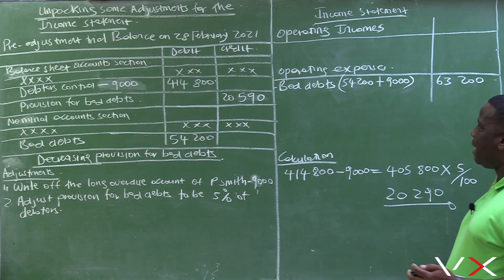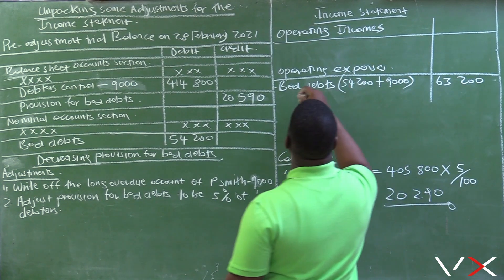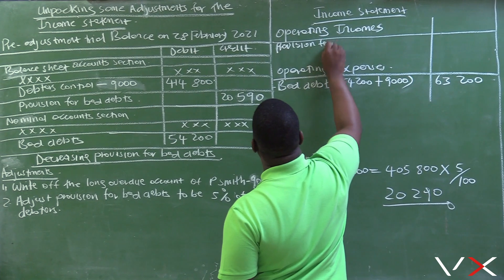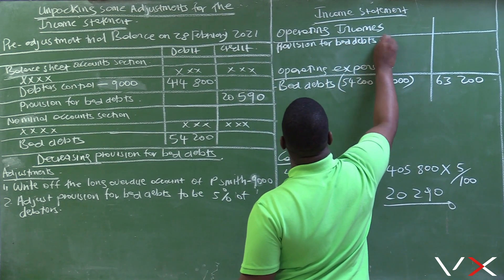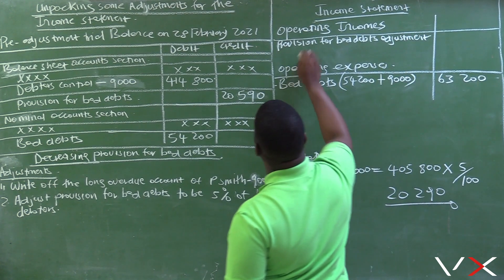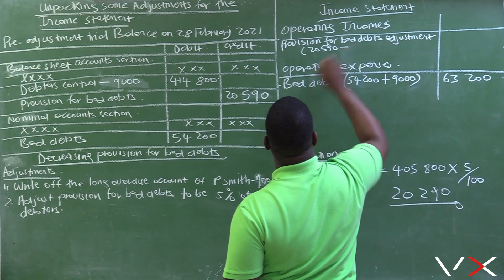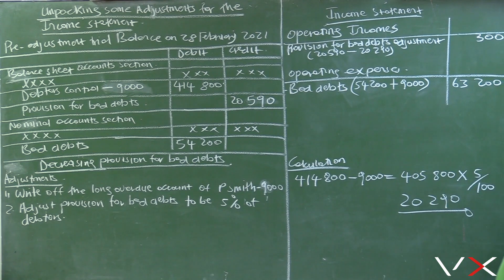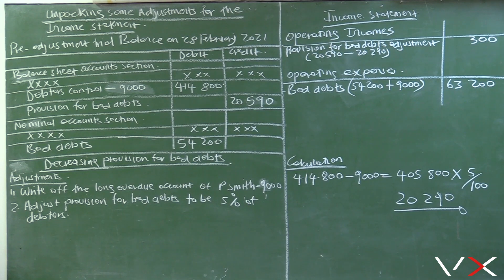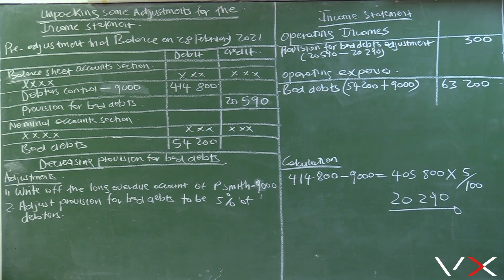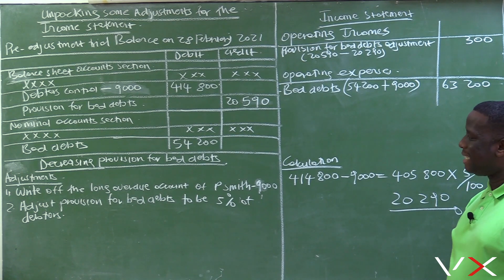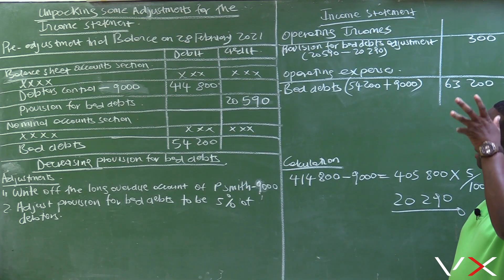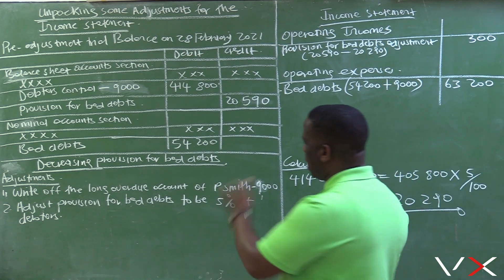When you are adjusting provision for bad debts by decreasing it, that adjustment becomes an income to the business. So it will be recorded under operating income as 'provision for bad debts adjustment.' 20,590 needs to be adjusted to 20,290 — that is an adjustment of 300. This 300 becomes an income. It is very important to remember: when you are decreasing provision for bad debts, the adjustment is an income. When you are increasing provision for bad debts, the adjustment is an expense.